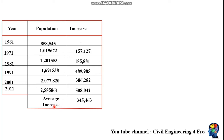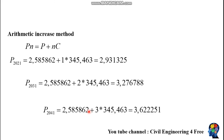Finally, we want a single increment value, which is the average increase — the average of all the increase values — giving us 345,463. The population at 2021 will be 2,931,325. You just plug in the n value: since the number of decades between 2011 and 2021 is one, n equals 1.